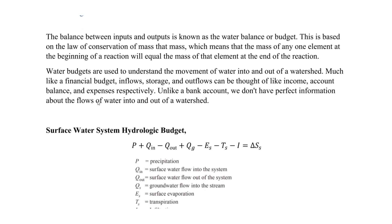Water budgets are used to understand the movement of water into and out of a watershed. We'll look at an example for a stream. An analogy can be given to a financial budget: we consider inflows, storage, and outflows, which relate to income, account balance, and expenses respectively.